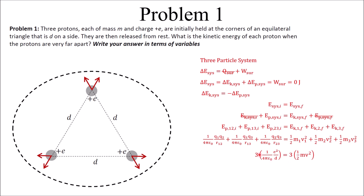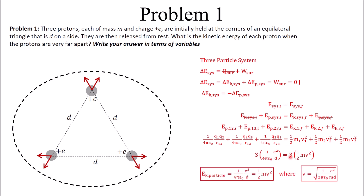The threes cancel out, and we get that the kinetic energy of one particle equals (1 over 4 pi epsilon naught) times e squared over d, which equals one-half mv squared. If you want to go further and solve for v, you can get an expression for the velocity as well. That's how you use the three-particle system to get the kinetic energy of each proton, which is what the problem asks for.